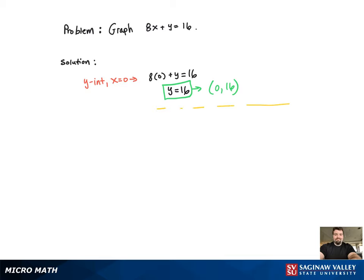Now we're going to find the x intercept. Once we have that, we'll have the two points to graph the line.